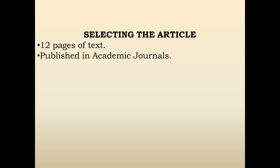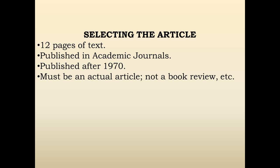The article should be published in an academic journal, as we've already established. It must be published after 1970 — I want you to see more recent scholarship, as some scholarship from the 1940s and 1950s is out of date and not as relevant for this course. And it must be an actual article, not a book review. There are 12-page book reviews and review essays out there in some journals, so you really want an academic article — something that's trying to argue, prove, or interpret something in a new way.